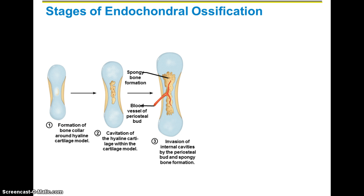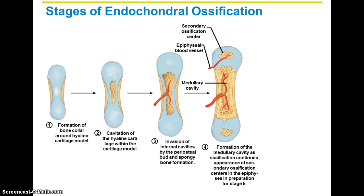The next step is that blood vessels start to make their way inside the medullary cavity. In the fourth stage, secondary ossification starts to form. At the ends of the long bones — the epiphysis rather than the diaphysis, which is the middle — those cavities start hollowing out as well, allowing blood vessels to make their way in that direction.